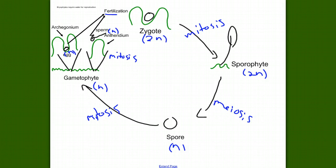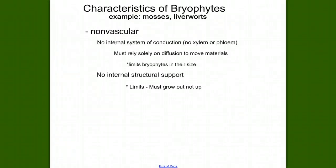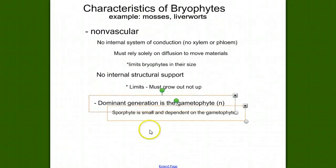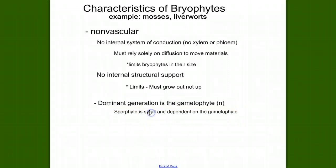Now, let's think about what other characteristics we now know about mosses. In mosses, the dominant generation is the gametophyte generation. When you look at moss on the ground, that green fuzzy stuff you're seeing is the haploid gametophyte generation. The sporophyte part of the life cycle is small and dependent on the gametophyte.